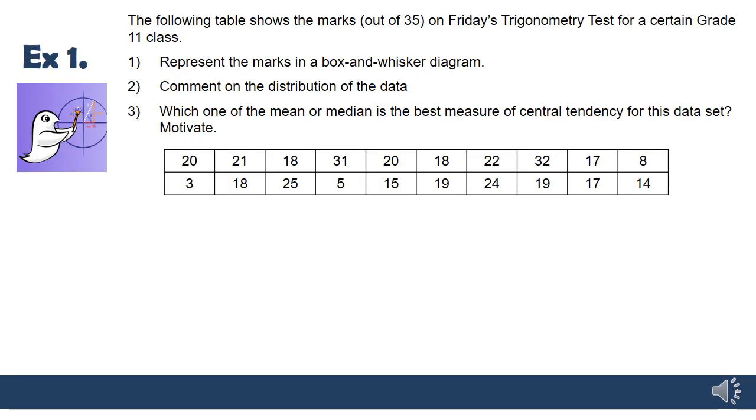Here's our first example, and I've worded these questions exactly like your homework tonight. The following table shows the marks out of 35 on Friday's trigonometry test for a certain grade 11 class. It may or may not be my class, I'm not going to lie. So represent these marks in a box and whisker diagram. Let's go through the box and whisker just to make absolutely sure that you know what you're doing. Remember that first, in the box and whisker diagram, I need my max, my min, and my three quartiles.